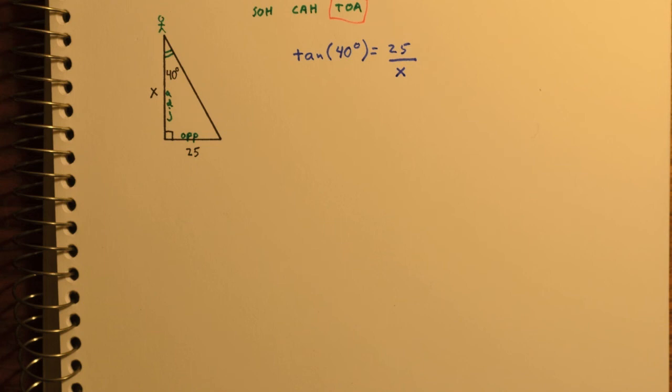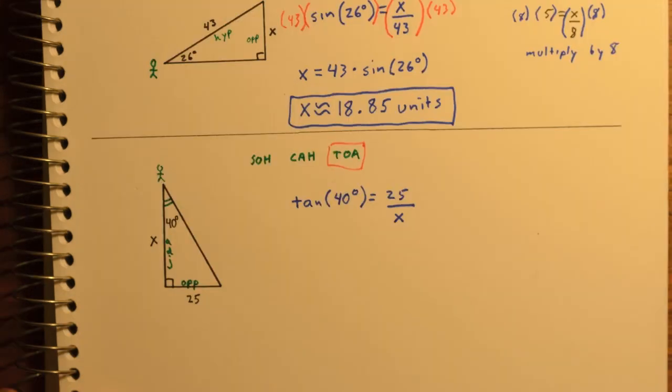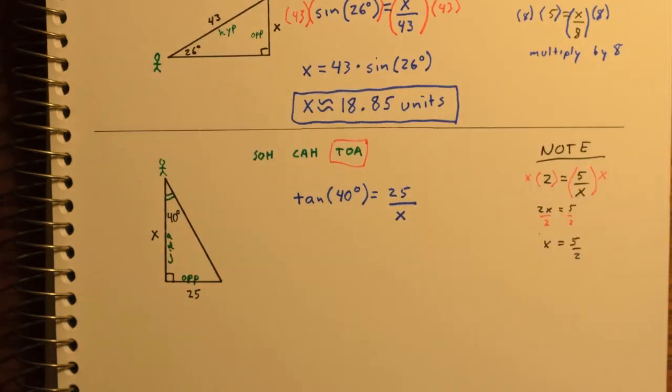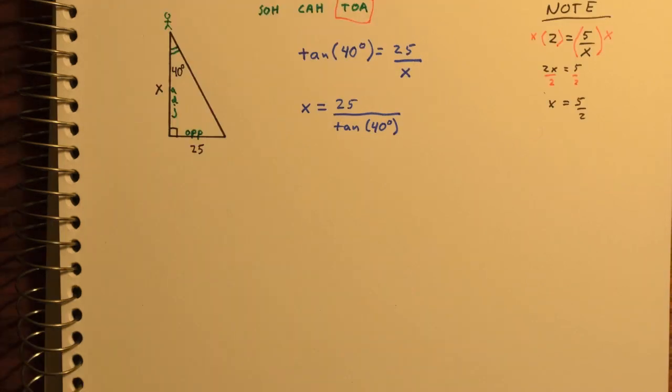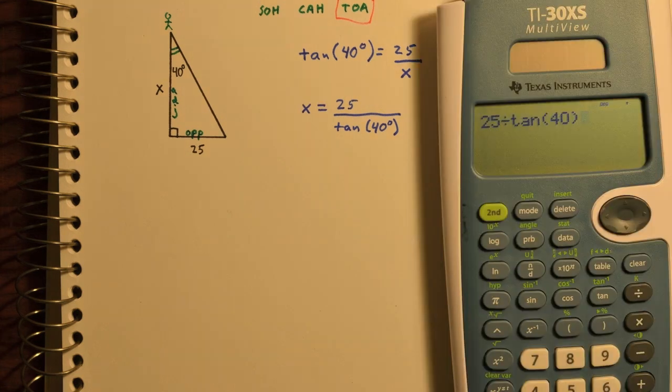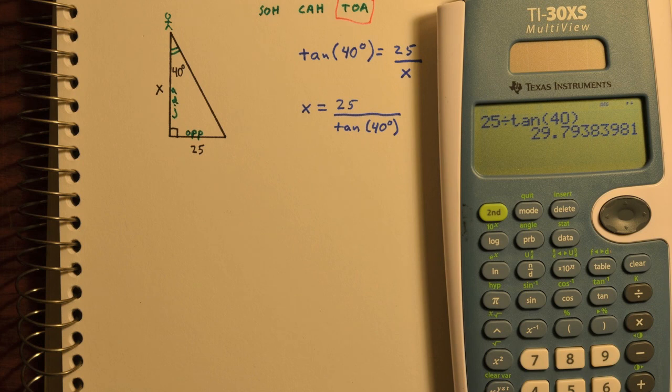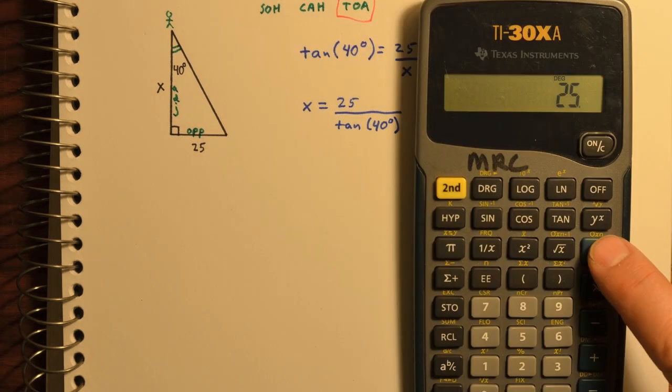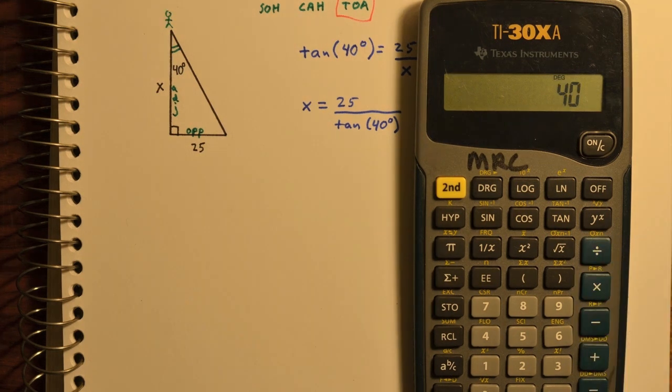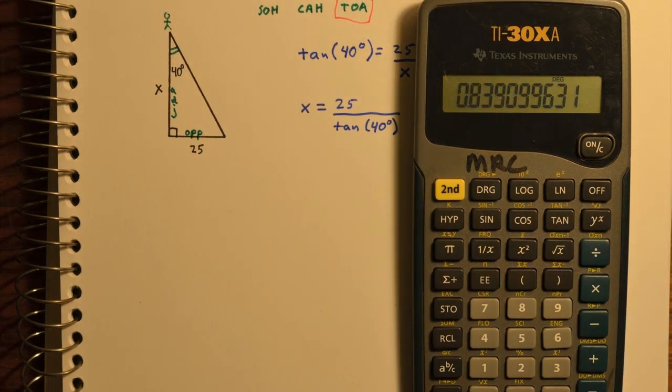Now this one looks a little bit different. In the previous example, we had x divided by a number. Now we have a number divided by x. So just note that whenever you have a number divided by x, if you multiply both sides by x, you'll then have to divide. So the tangent of 40 equals 25 over x. That's the same as 25 divided by the tangent of 40. And so then your calculator will give you approximately 29.79. Likewise with this calculator, 25 divided by, and then type 40, then type tangent, then press equal.